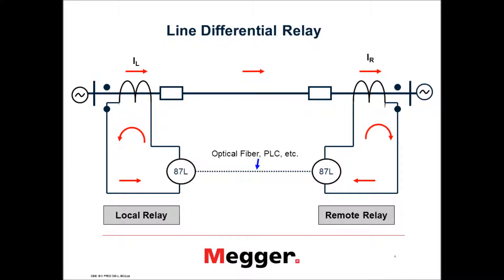I'm going to focus primarily on line differentials. It's fairly simple to understand and very fast. The line differential is still today the highest speed, most secure means of line protection. Typically, as we all know, it's current in equals current out. In this case, I'll show an optical fiber communication link between the two ends of the transmission line. When the fault is internal, it operates very quickly and very securely, and when the fault is external, it will not operate.